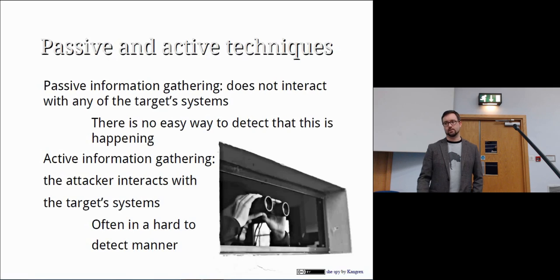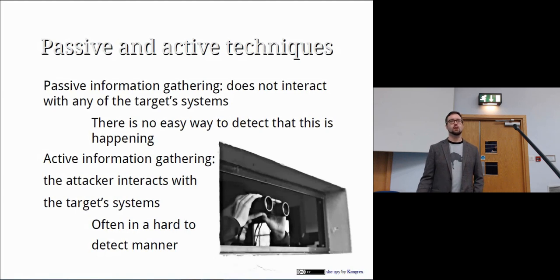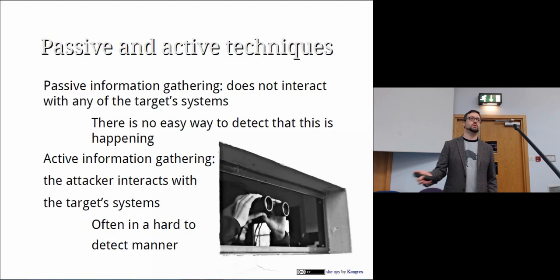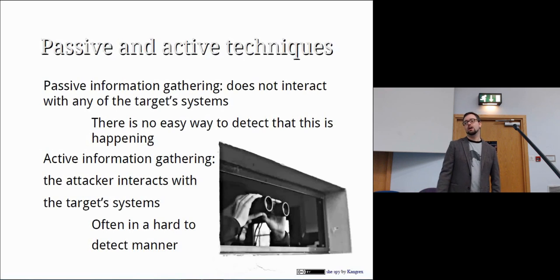Then there's active information gathering where you're actually interacting with the target systems. But it's often really hard to detect, or it happens so often that no one would ever investigate it. Something like running a port scan against a computer on the internet — if you're running a web server, you can't investigate every port scan that happens because it just happens so frequently. A lot of scanning stuff will just go under the radar.